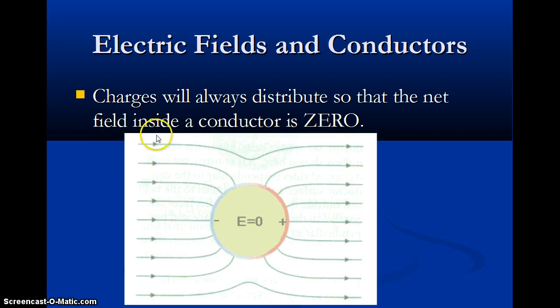Inside a conductor, it turns out when you put a conductor in an electric field, it's going to distribute the charges along the surface so that the field inside is zero. Because if the field inside wasn't zero, what would happen?